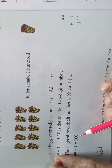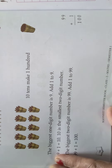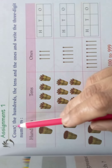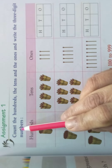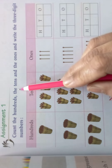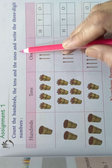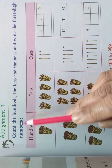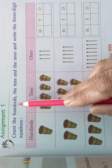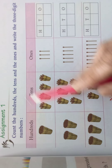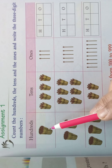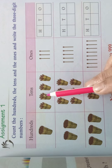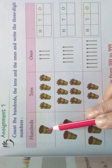Now we will do assignment 1. Count the hundreds, the tens and the ones and write the three digit number. Look here, count the hundreds, the tens, and the ones. This is hundreds, these are all tens — one ten, two tens like that. This is one hundred. There are ten tens here, and these are all ones.